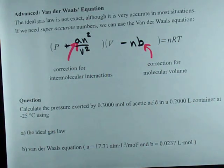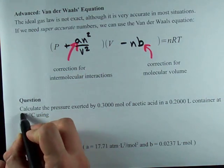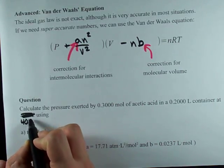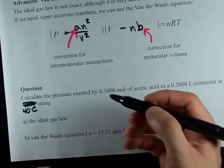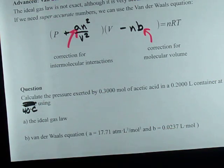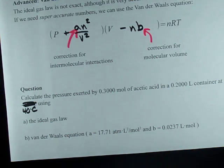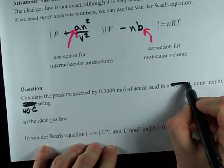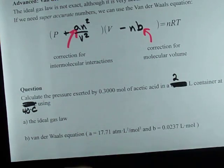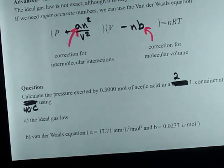To demonstrate how much they can affect the numbers, I want to do this question with you, but I'm actually going to change something here. I'm going to change this to 40 degrees Celsius, because acetic acid is a liquid at negative 25, so that doesn't make any sense. Calculate the pressure exerted by 0.3 moles of acetic acid in a 2-liter container at 40 degrees Celsius using the ideal gas law.